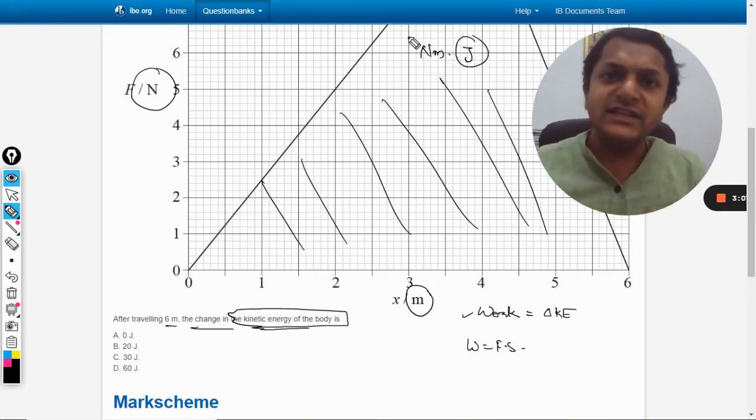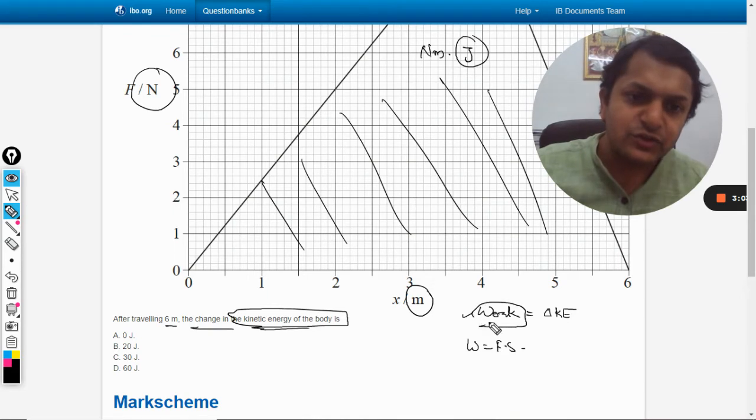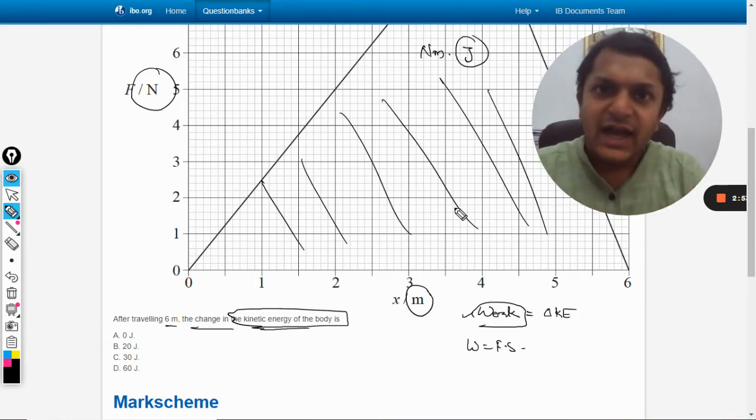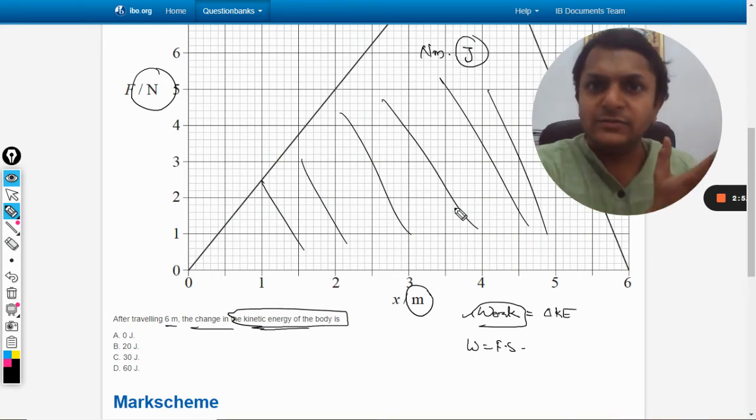So joule is either work or energy, so it means we have reached the work. So area under the curve here, we will directly be able to find the work. So now we need to find the area under the curve, so that will be equal to work and that will be equal to the net change in kinetic energy.